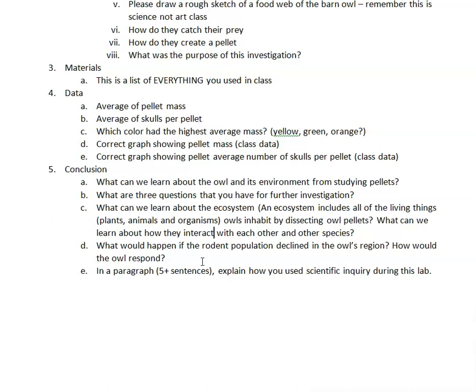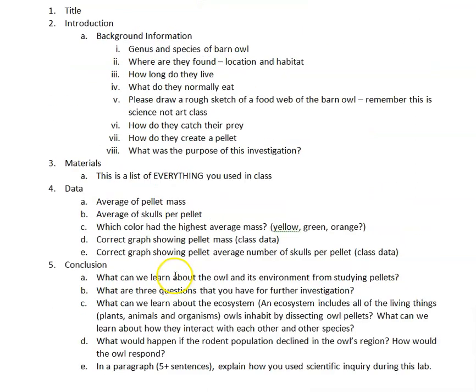Use some original, creative thoughts about how the owls would respond. Then finally, in a paragraph of roughly five or more sentences, explain how you used scientific inquiry during this lab — how did you use the scientific method? That was one of the biggest goals of this activity: to practice science, practice observing, practice data collection, practice analyzing. I want you to explain that in five-plus sentences in the conclusion.